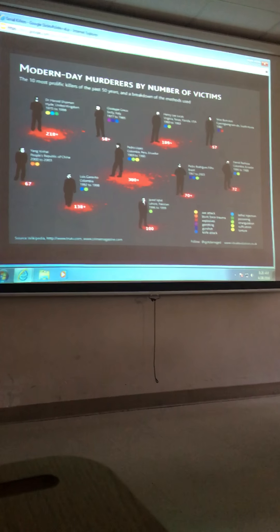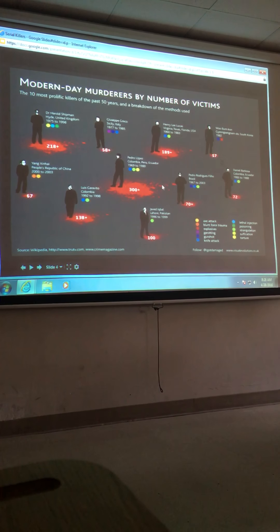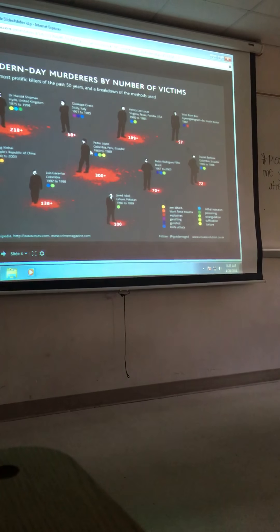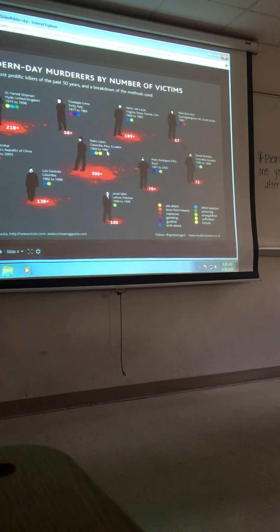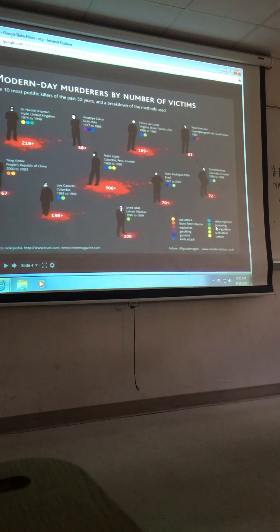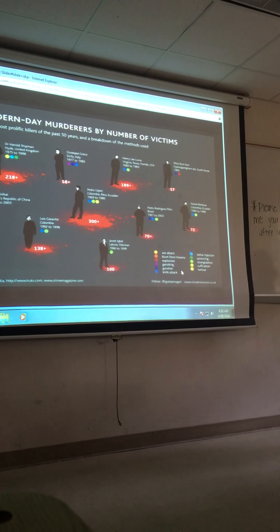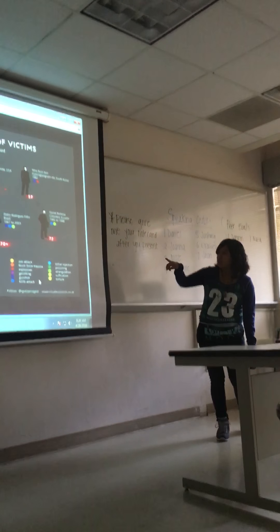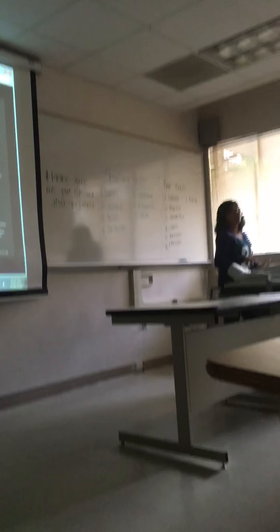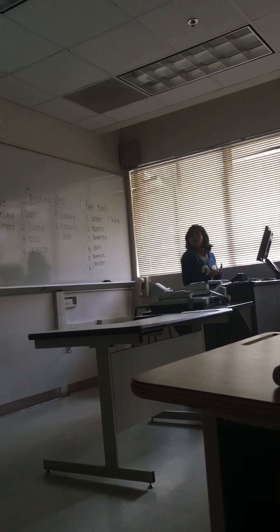This is a graph of modern-day murders by number of victims. The red section at the bottom represents the number of victims killed. The highest victim count was by Pedro Lopez, who is from Colombia and killed in Colombia, Peru, and Ecuador — more than 300 people. His methods included gunshot, knife attack, poisoning, and torture. Each killer on the graph is from a different country, showing that serial killers exist worldwide across different regions and languages.